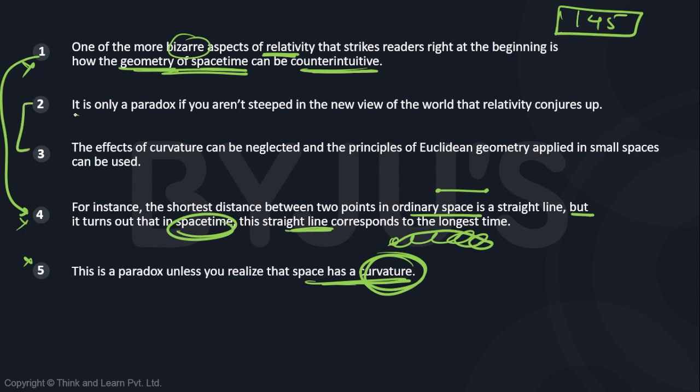Because sometimes students feel that there cannot be two sentences that say this is a paradox and it is only a paradox. So you know 2 must be the odd one out. But if you see this, we are explaining why in the space-time, a straight line corresponds to the longest time because space has curvature.